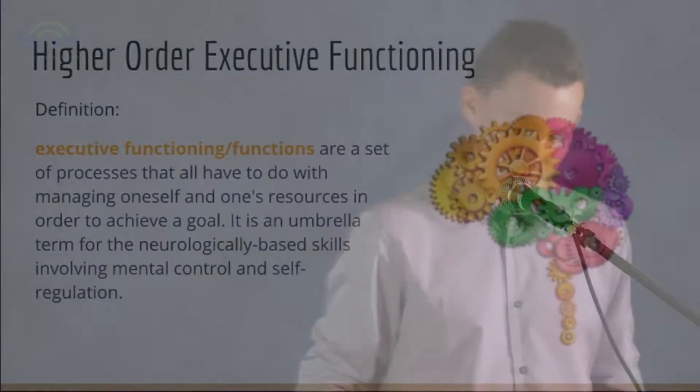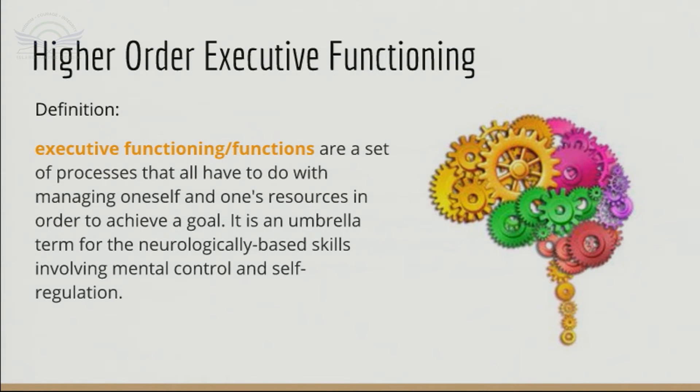Higher order executive functioning. So executive functions are a set of processes that all have to do with managing one's self and one's resources in order to achieve a goal. It's an umbrella term for the neurologically based skills involving mental control, self-regulation. There are four elements of executive functioning which I'll explain later in the presentation.